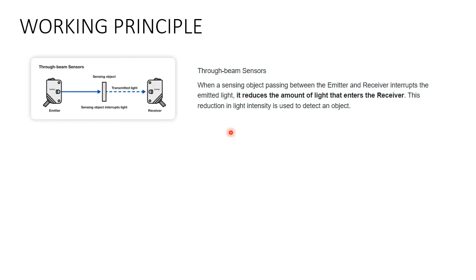As soon as there is interruption, it reduces the amount of light received by the receiver, and this reduction in light intensity is used to detect the object. The emitter and receiver are separate, and the part is introduced in between them, interrupting the continuous beam of light. The light can be infrared or red light depending on the sensing range.